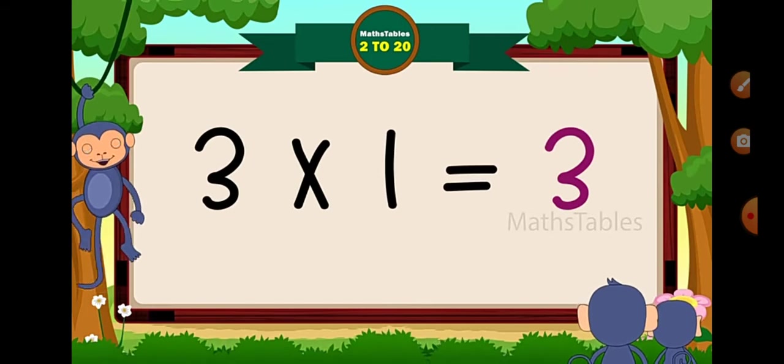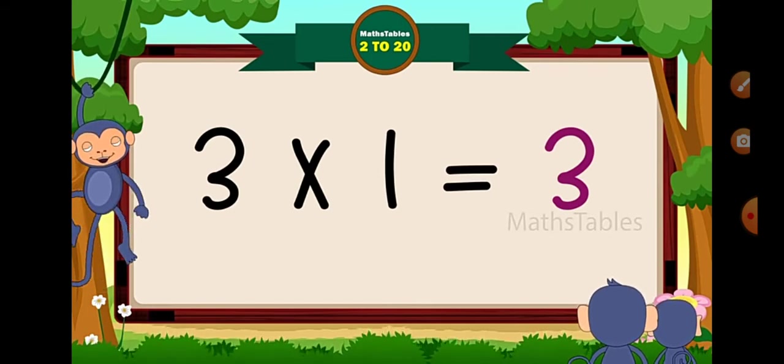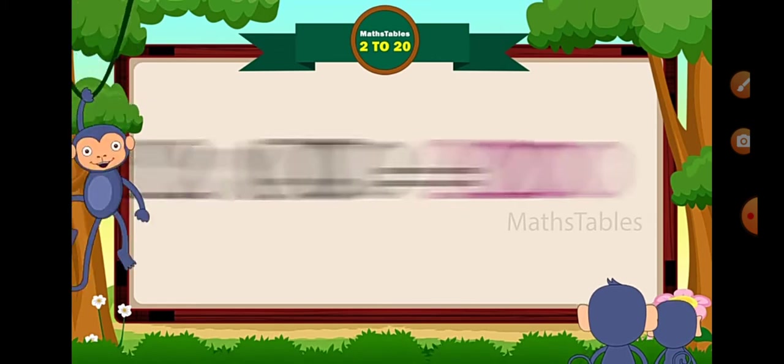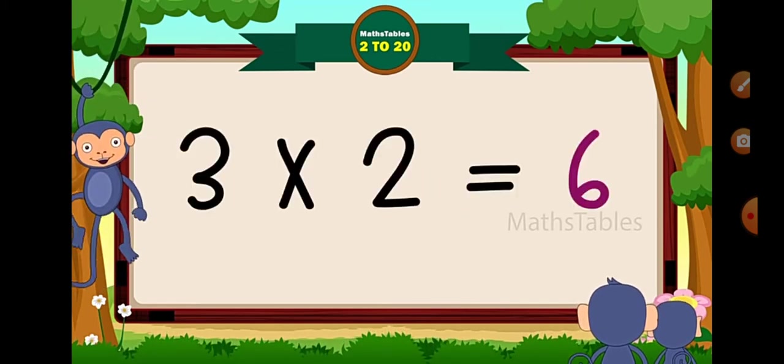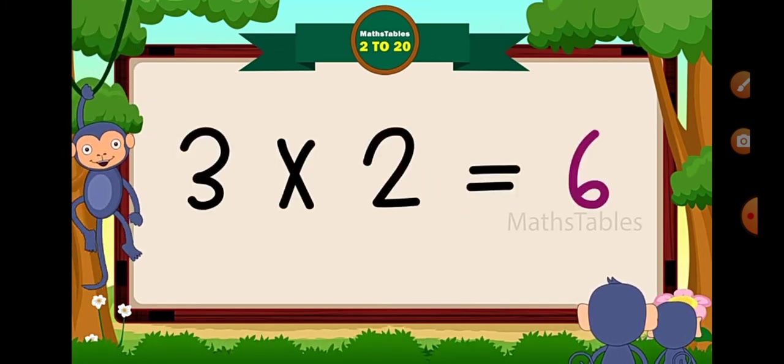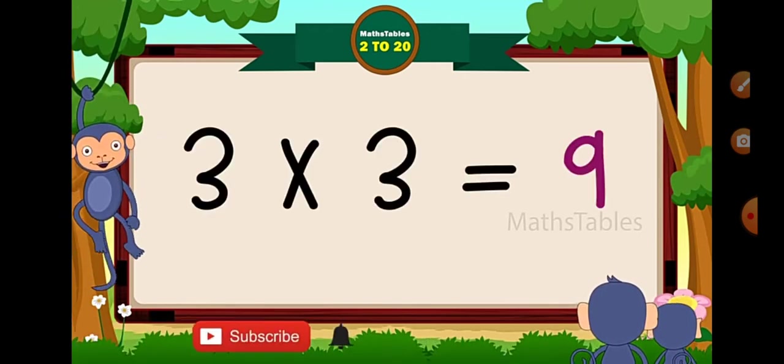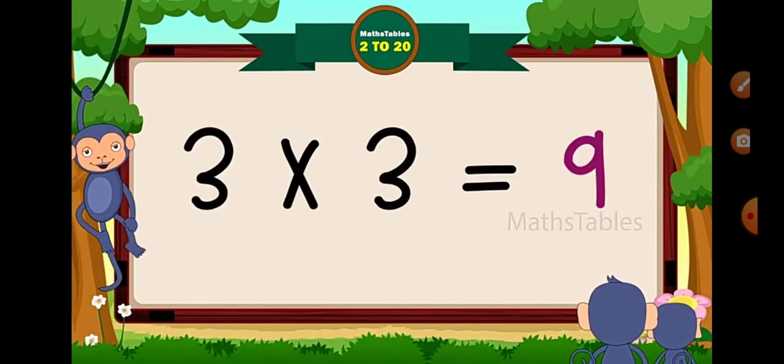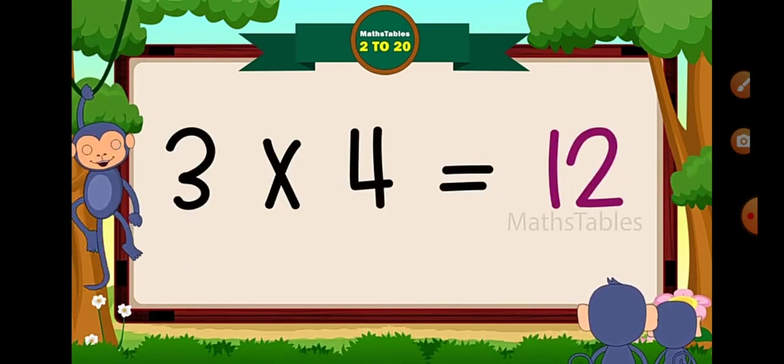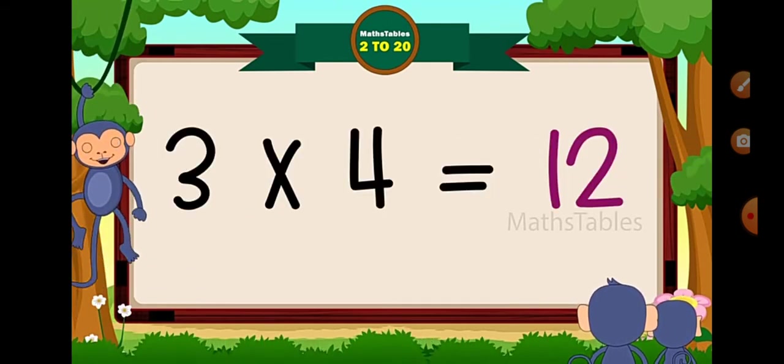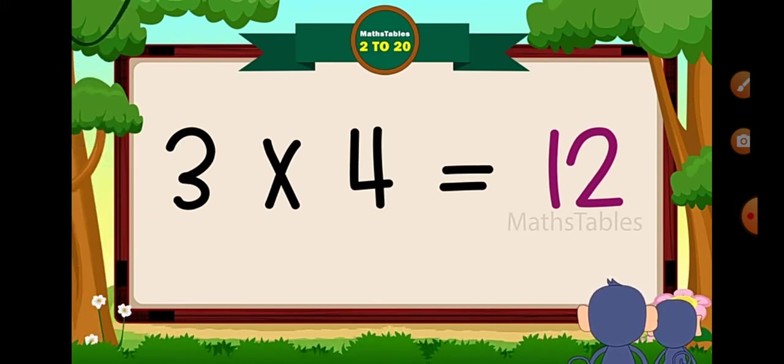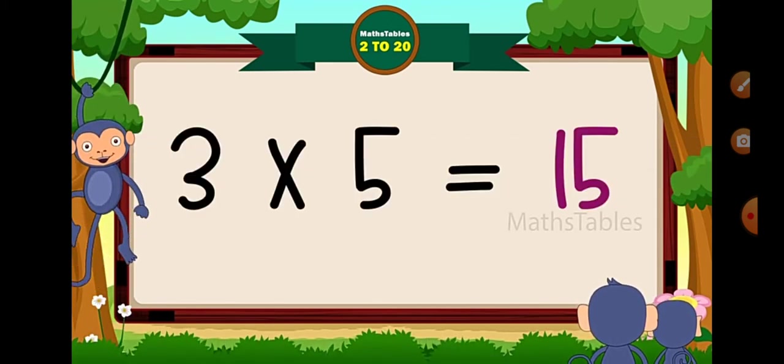3 × 1 = 3. 3 × 2 = 6. 3 × 3 = 9. 3 × 4 = 12. 3 × 5 = 15.